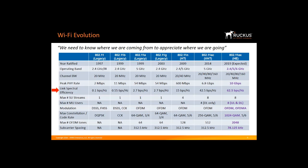High throughput sells products, but overall spectrum performance is what matters most. This is also reflected in the naming of standards: 11n is called HT or High Throughput, 11ac was called VHT or Very High Throughput, and 11ax is called HE for High Efficiency. Efficiency is the big thing in the new standard.